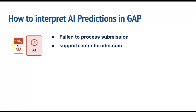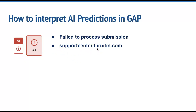If you get a red icon with an exclamation point, it indicates that there was an error during the Turnitin AI detection process. If the file meets all of the file requirements for successful processing but has still generated this error, Turnitin asks that you contact them at supportcenter.turnitin.com so that they can help investigate the situation further.